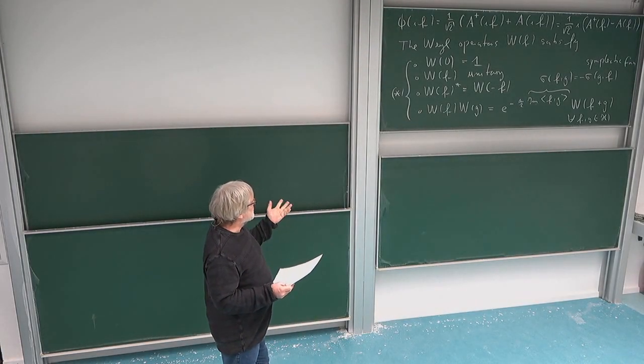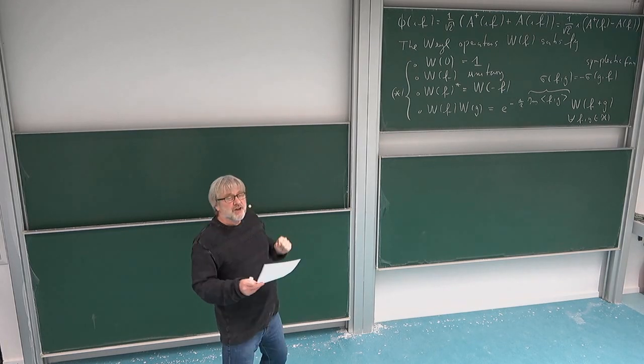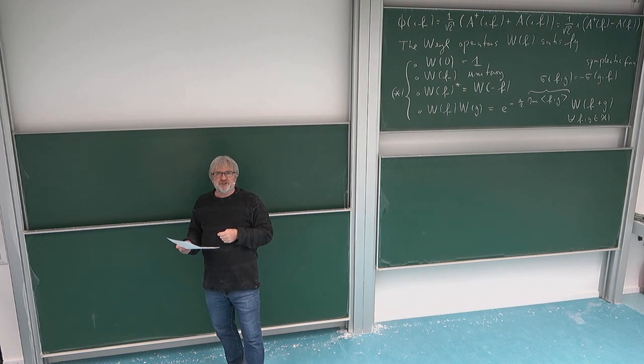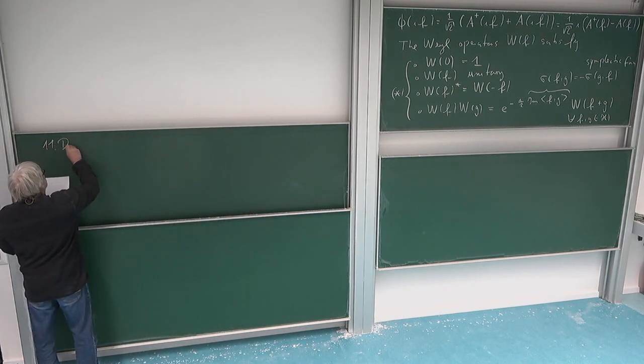Now we have seen that there is a unique object, C-star algebra, which is generated by those Weyl relations. And so that's what we're now going to call the CCR algebra. So let me write down this definition.